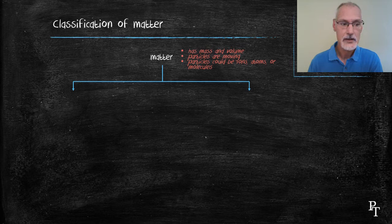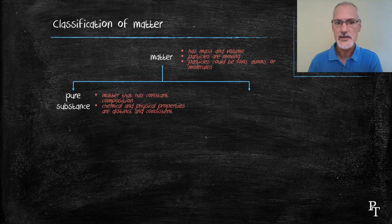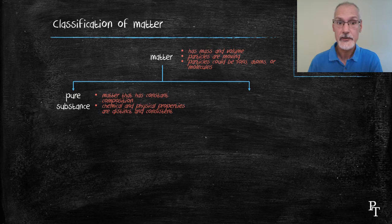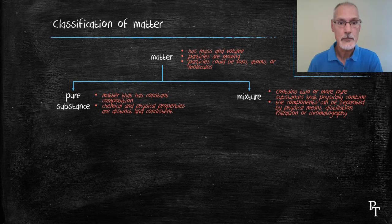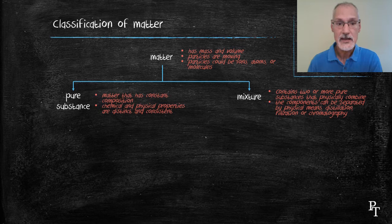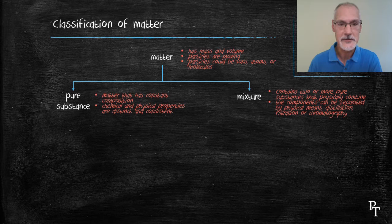Matter is further broken down into two categories: pure substances and mixtures. In the case of pure substances, it's matter that has a constant composition that never changes and has very distinct chemical and physical properties, such as melting points and boiling points. Mixtures, on the other hand, contain two or more pure substances and have a variety of properties, usually made by adding together the properties of the substances that make them up. They can be separated by simple means such as distillation, filtration, or chromatography.